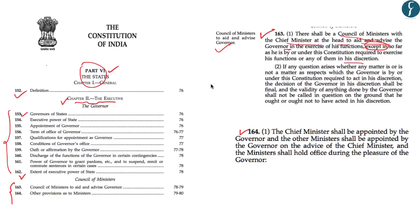This exception is about discretionary powers given to the governor by the constitution. As far as those discretionary powers are concerned, the governor shall not pay heed to the advice of the chief minister. For example, if a bill passed by the state legislature violates the federal structure or constitution, the governor has the right to reserve that bill even if the chief minister or the council of ministers advise against it.